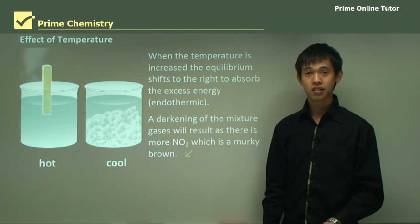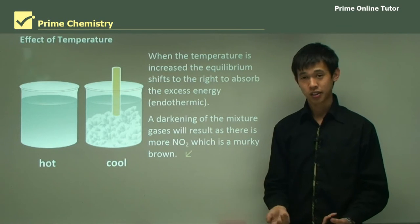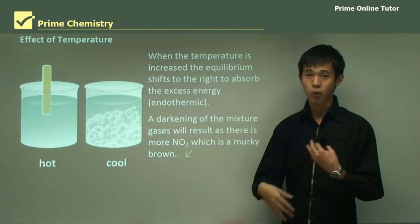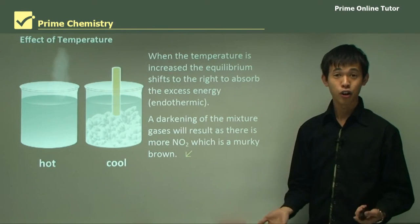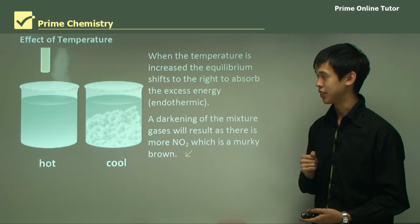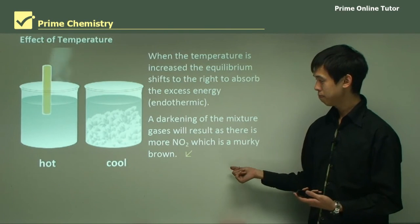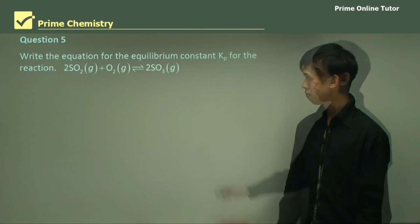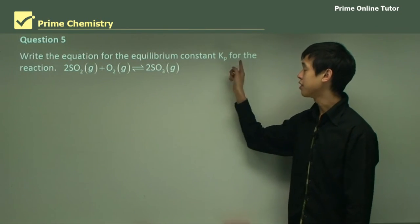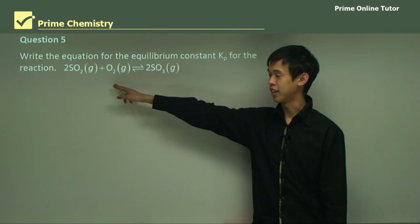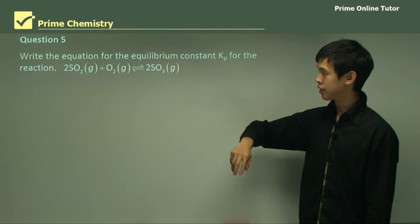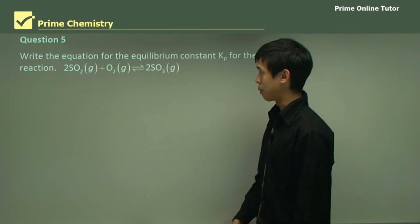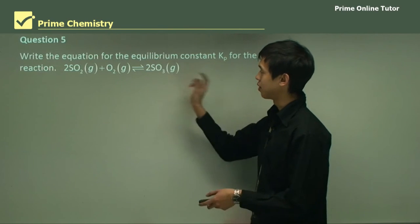So that concludes today's lesson on the practical aspects of working on Kp. We learned how to calculate it, what are the main things to note when we calculate it, and we looked at a first-hand investigation of an equilibrium system. So we'll move on to the question segment. Question 5: write the equation for the equilibrium constant Kp for the reaction as shown here. Remembering all the things we talked about, pork, products over reactants equals Kp. So all we have to do is just write the equation, we don't need to know the number.